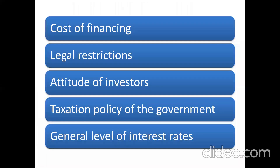Moving to the last few factors — number seven is the cost of financing. It is relatively costlier to raise finance through equity shares because of advertisement expenditure, underwriting commission, brokerage, and other related expenses. So if that cost of financing cannot be borne, the company can go for debentures or other securities, as raising funds from equity is quite costly compared to other sources. So even that could be a factor affecting financial planning.